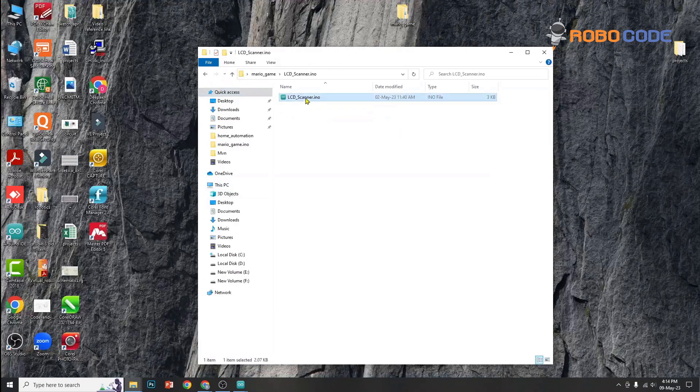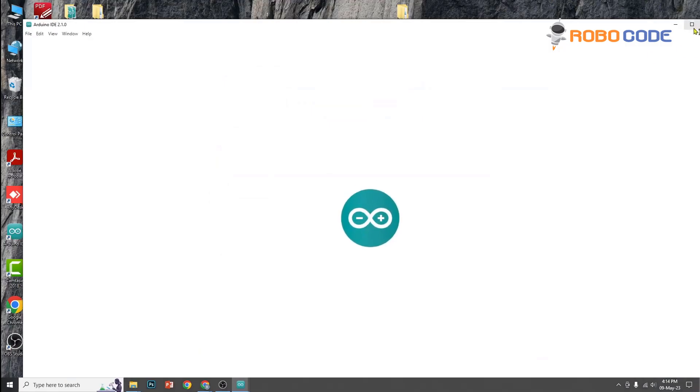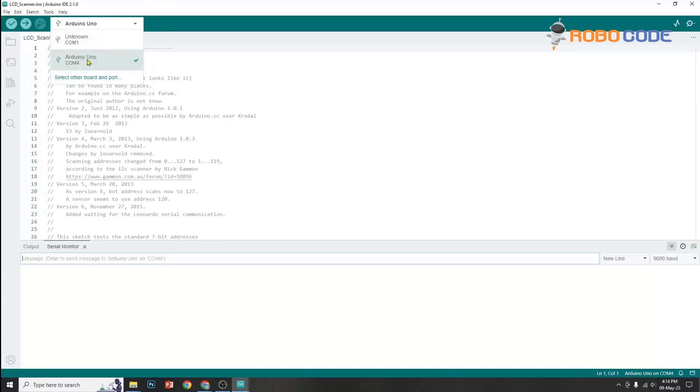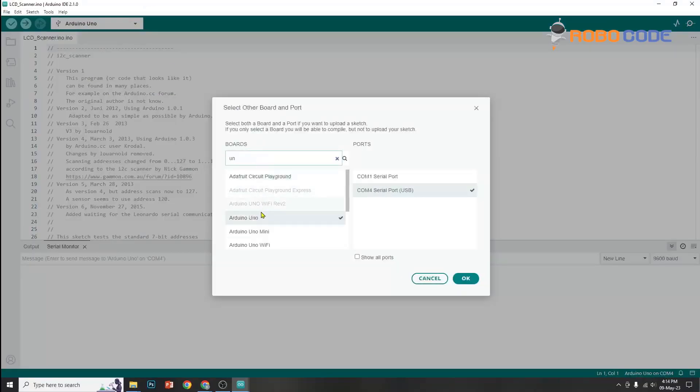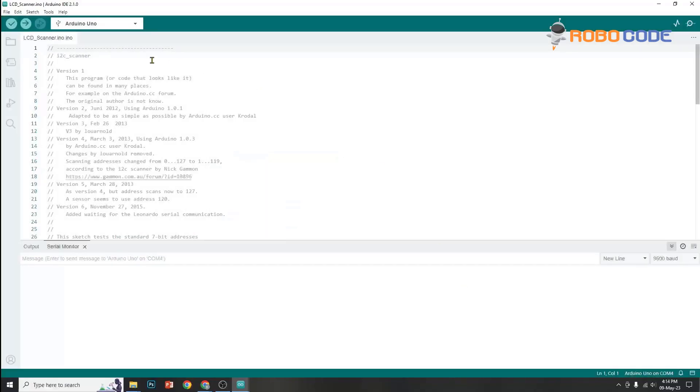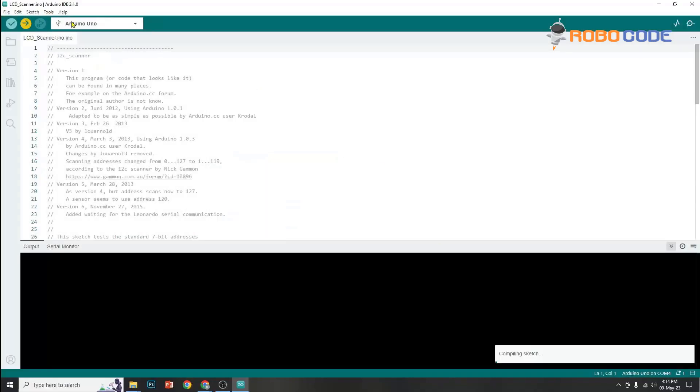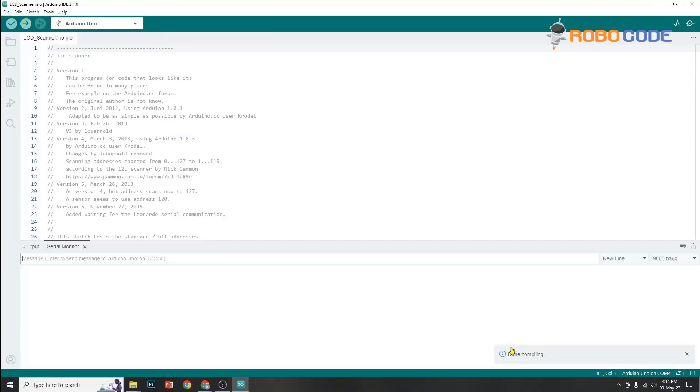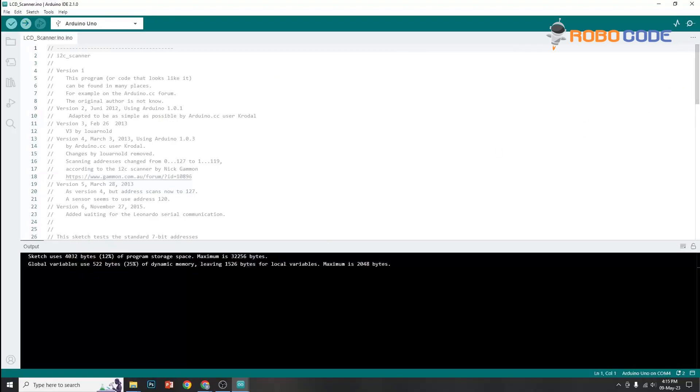Once that is done, we'll click the LCD_scanner.ino file. We'll select the board and the port. In the board, we'll search for Arduino Uno and select it, and we'll select the port on which the USB is connected. Once that is done, we'll upload the code. If there are no errors, then you can see the output showing device found at address 0x27. It could be different in your device. So we'll copy that.